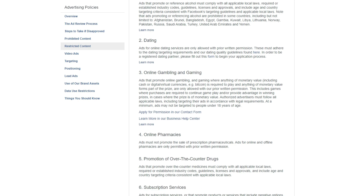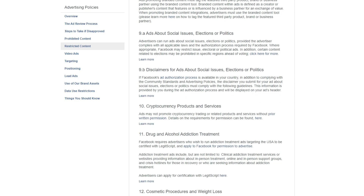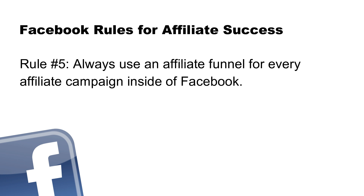Rule number three: before promoting affiliate products or services, read and learn about Facebook's prohibited and restricted content categories. Below this video you'll find a link to this page — I suggest you take five to ten minutes to go through all the content categories. Rule number four: always use a Facebook page as the brand for your affiliate campaigns, and ensure your affiliate promotions are closely related to the topic or niche of your page. I see this mistake over and over — a page about cars or pets promoting affiliate products with nothing to do with the page's topic. Rule number five: always use an affiliate funnel for every affiliate campaign on Facebook, which I'll show you exactly how to set up in the next few lessons.